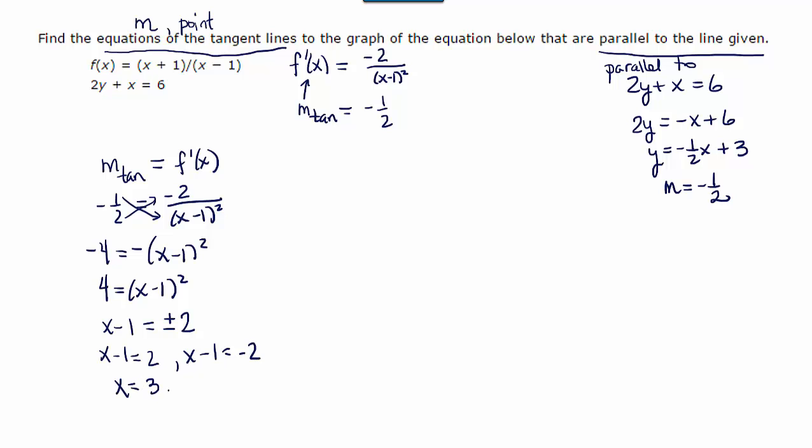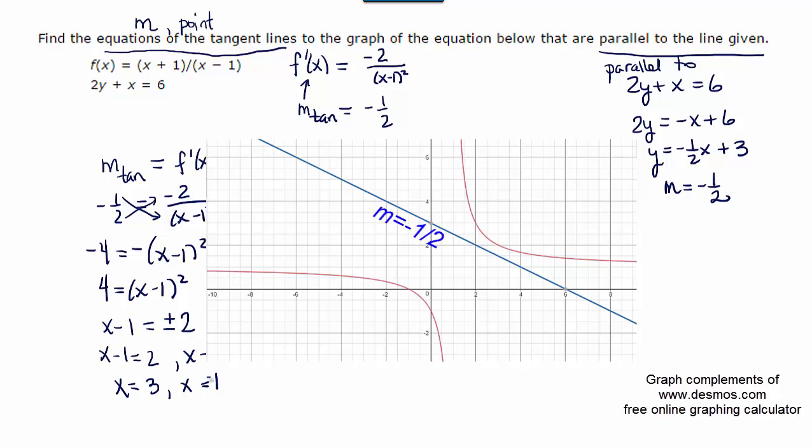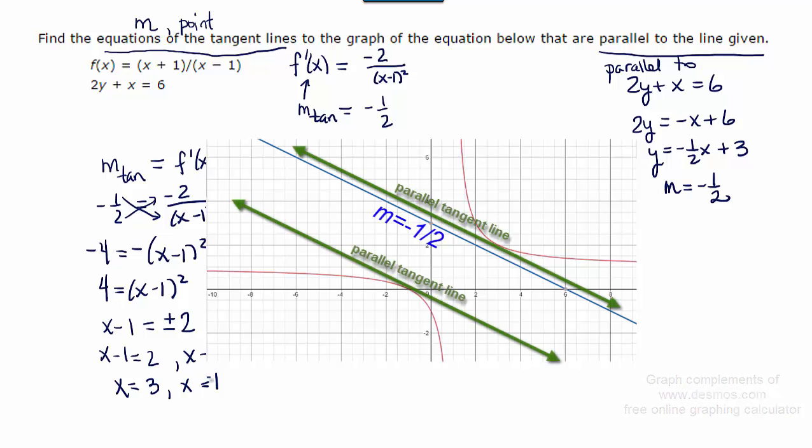That means x could be 3 or -1. So there are actually two places where our tangent to our function f(x) has a slope of -½. This would explain why they asked us to find equations, plural, of tangent lines. So we have two tangent lines to find. The one at x = 3 and the one at x = -1.